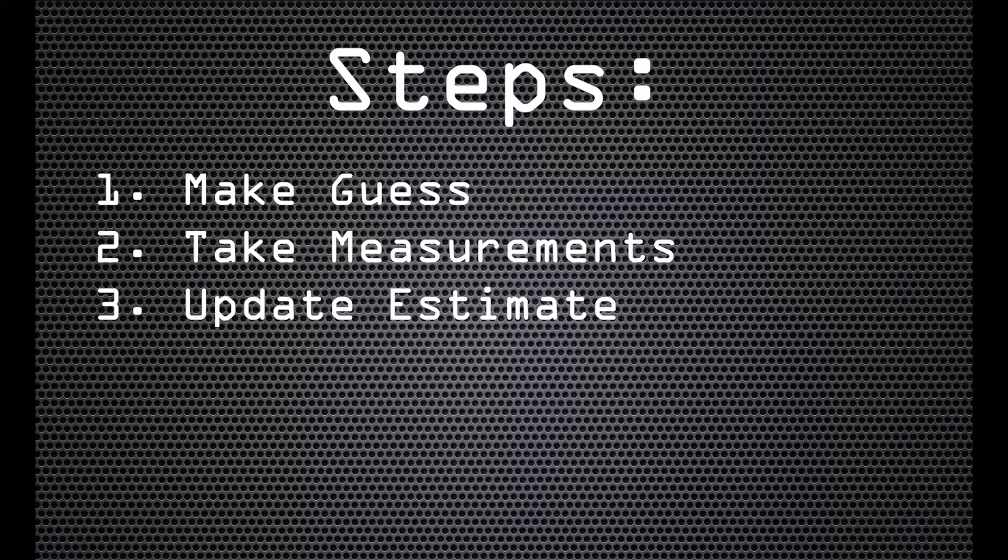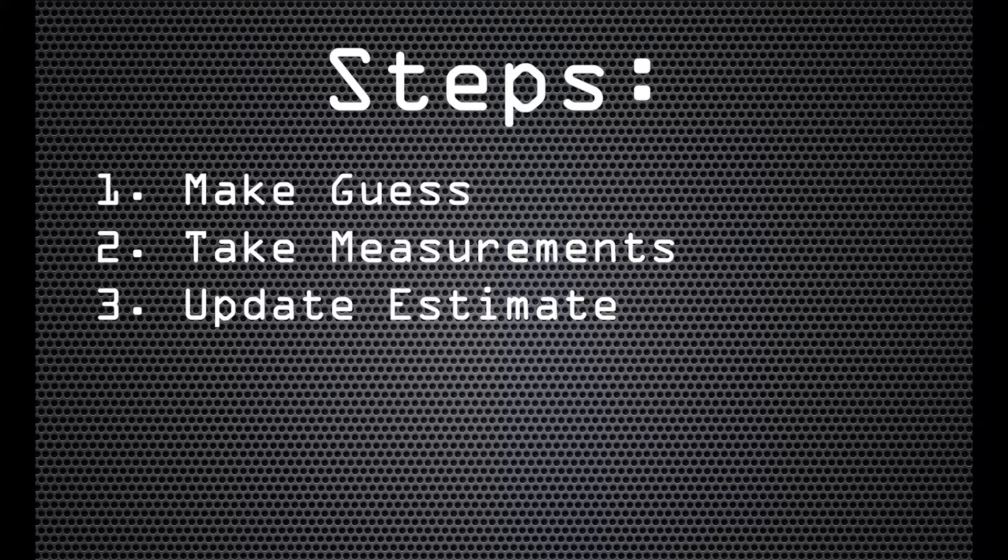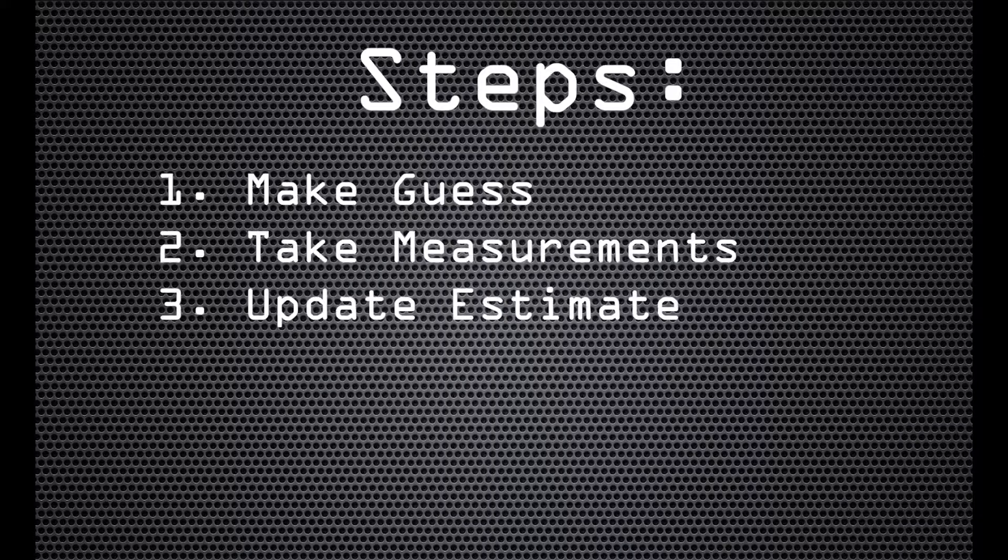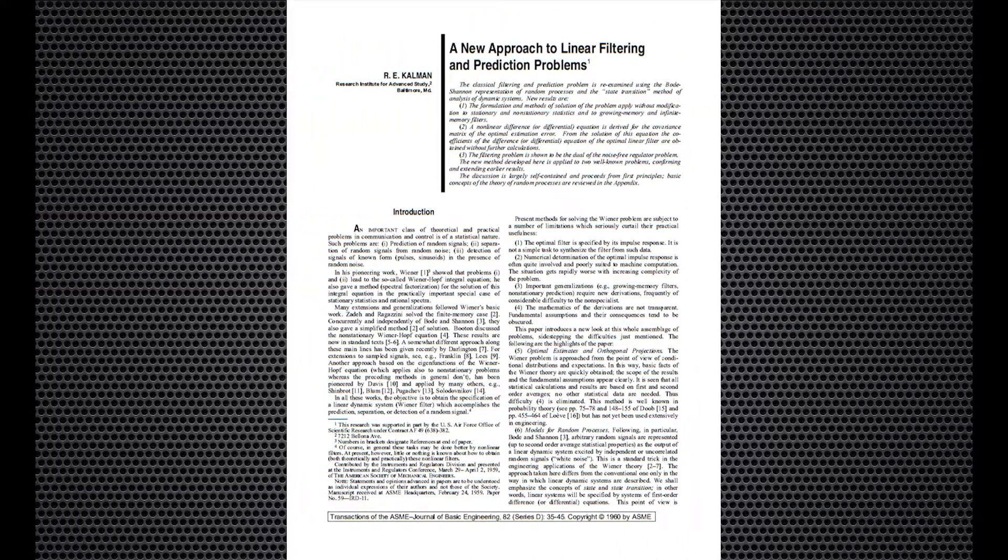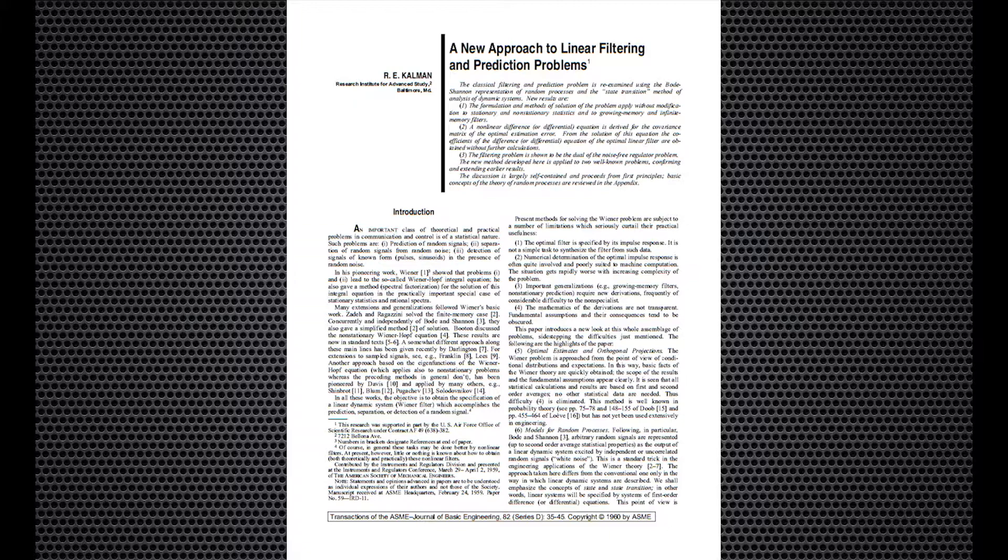What makes the Kalman filter such a popular filter is that the end result is statistically the best possible approximation of the system's current state. In the 57 years since the original filter was theorized, improvements to performance have been made. The original Kalman filter relied on a linear data set, making it difficult to apply to most data.